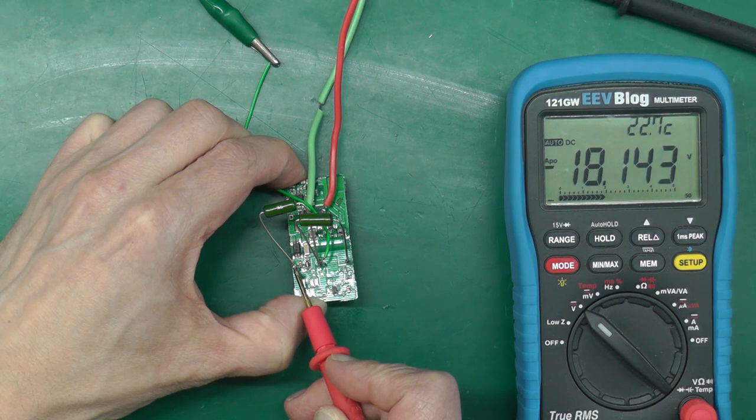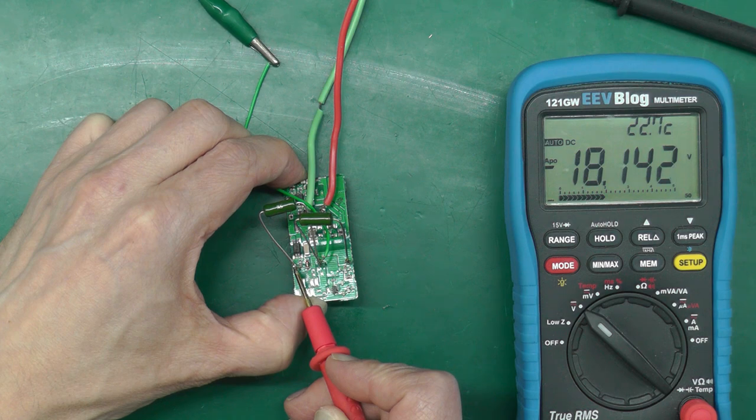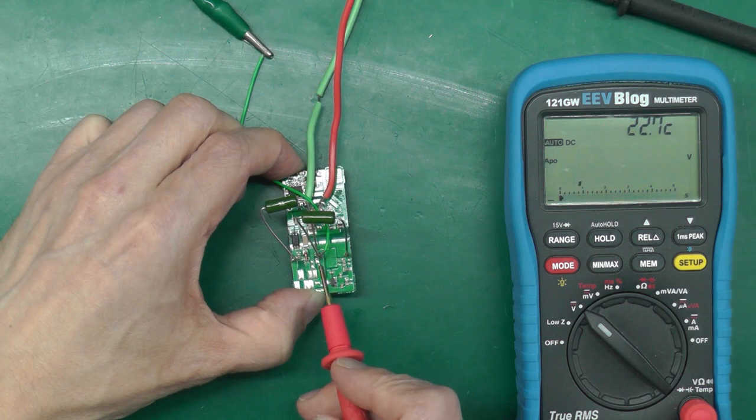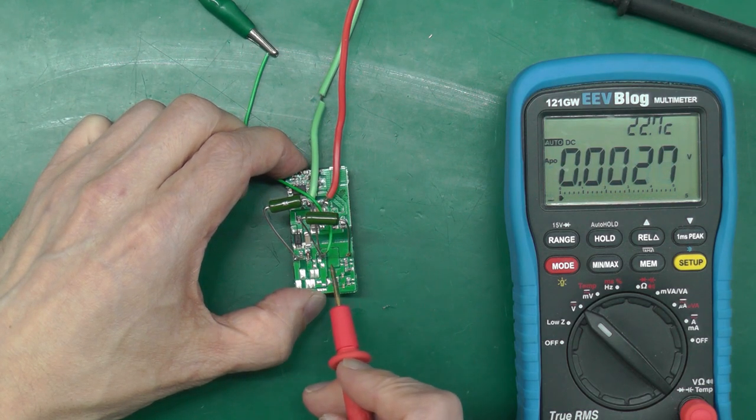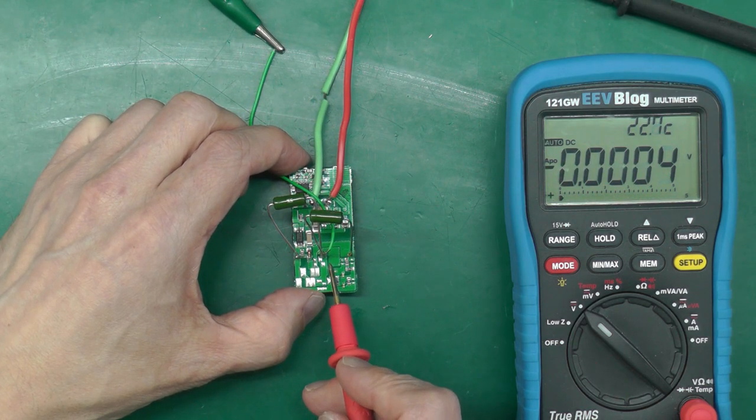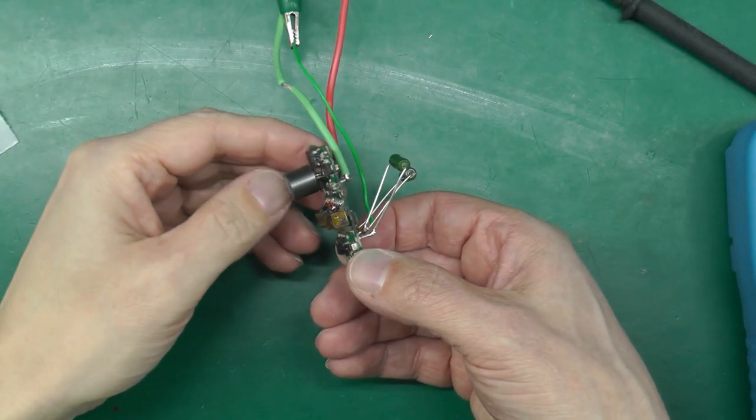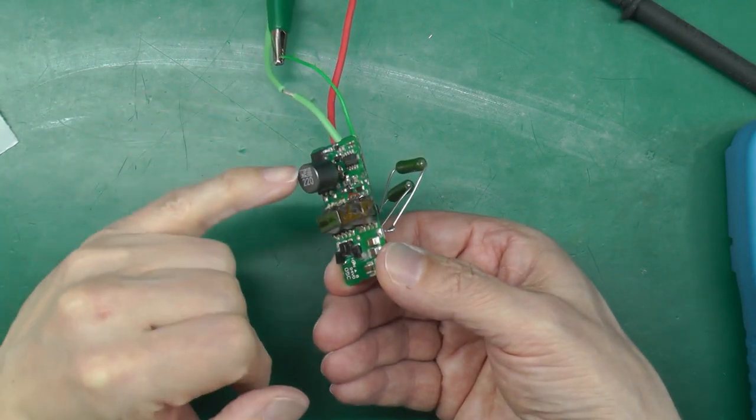Just over the 18 volts on the minus rail there. I'll hook up the scope to the positive output so we can monitor that, and I'll just leave it running and see what happens.